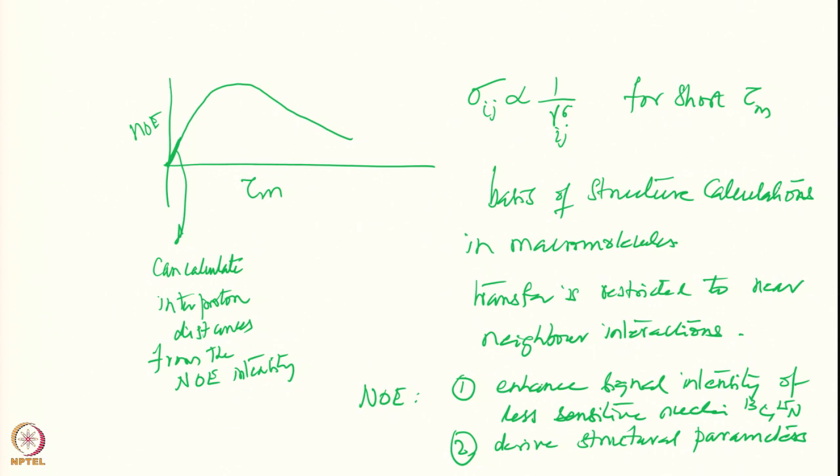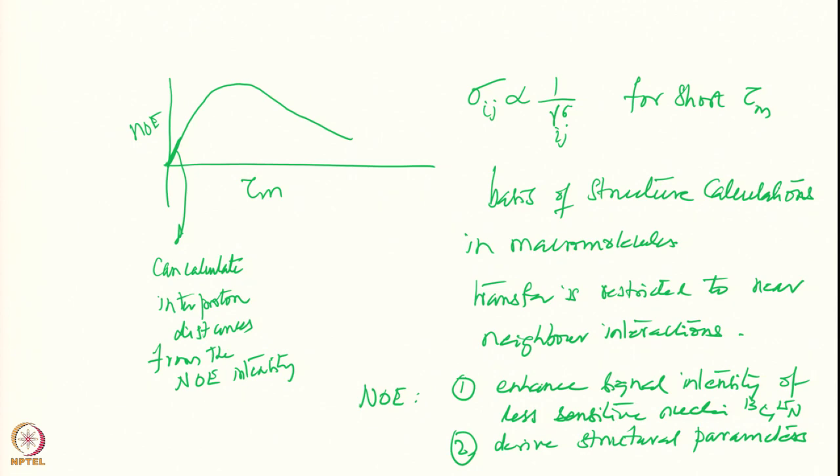In summary, NOE — or polarization transfer by NOE — has two objectives: first, to enhance signal intensity of less sensitive nuclei such as carbon-13 and nitrogen-15; and second, to derive structural parameters of macromolecules. These are the two important applications of NOE, and we will not go into more theoretical detail as our focus is structural biology.